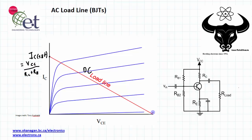At the other extreme of the load line is the point where the circuit is cut off — the current is cut off — and this is called VCE off. This is the voltage across the collector and the emitter that will be needed to make sure there is no current in the collector. And that's going to occur when the voltage across the collector emitter is equal to VCC.